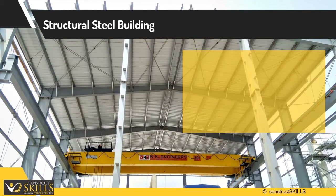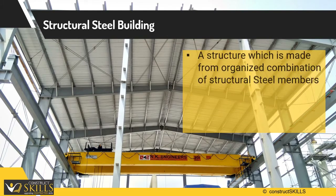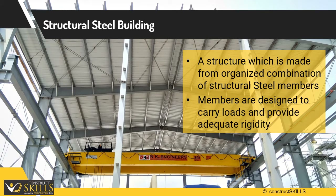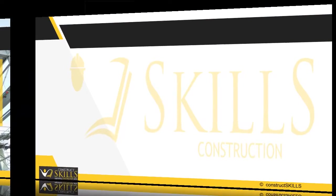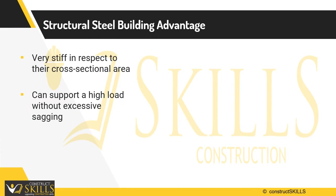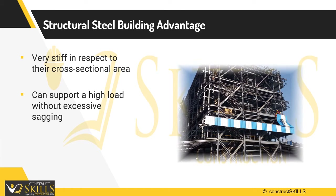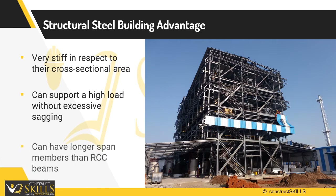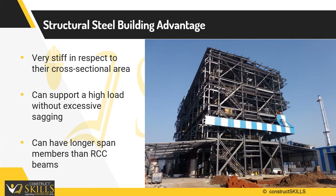Structural steel is a metal structure fabricated with steel. When a building is made from the organized combination of structural steel members designed to carry loads and provide adequate rigidity, it is called a structural steel building. Steel buildings are very stiff in respect to their cross-sectional area and can support high loads without excessive sagging. They do not easily deform, buckle, twist, or bend, and are easy to modify. Steel buildings are widely accepted due to cost efficiency, and a larger span building can be constructed compared to RCC, hence it is widely used in bridges.